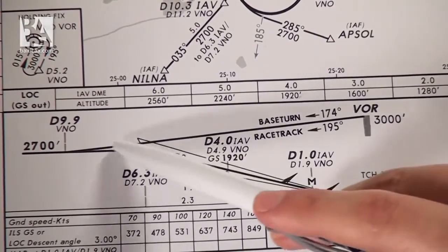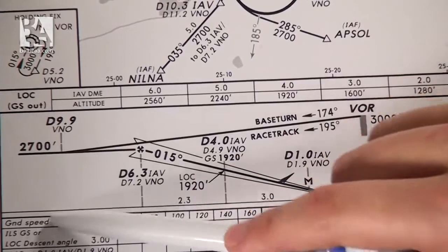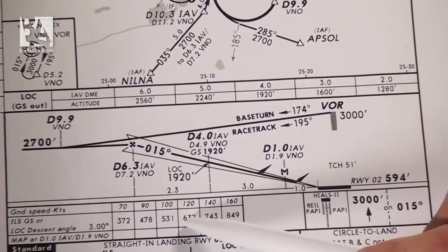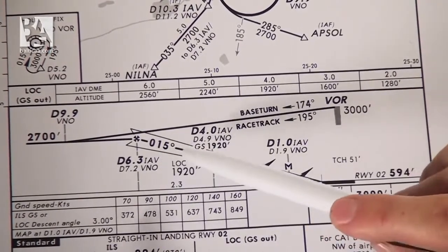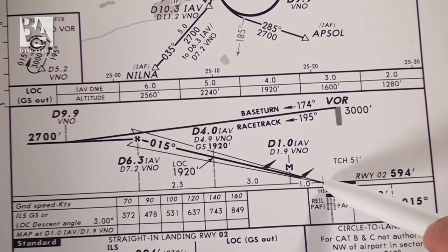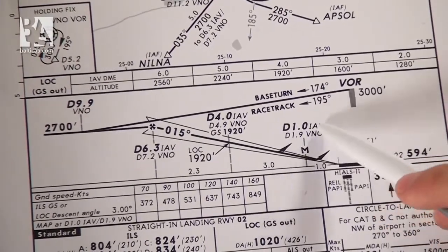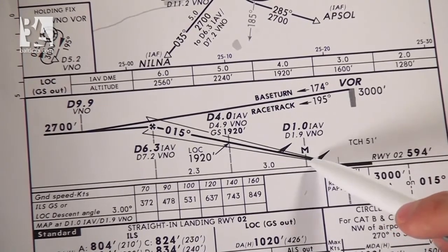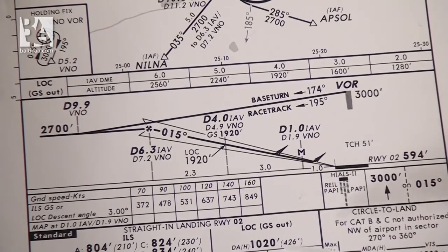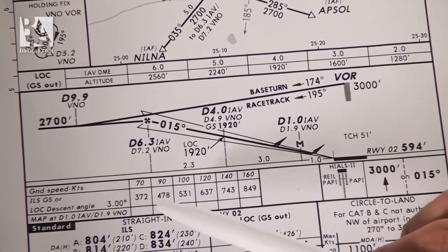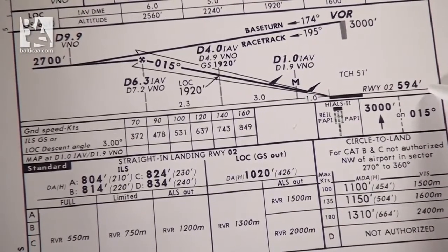Below this we have a graphical display of the descent, which shows we should be flying a 3-degree glide slope on a course of 015 degrees towards the runway threshold. We can also see the missed approach points — at DME 1.0 from India Alpha Victor we have the minimums point where we decide whether to continue the approach or abandon it, most likely in the localizer case. Runway 02 has an elevation of 594 feet above sea level.